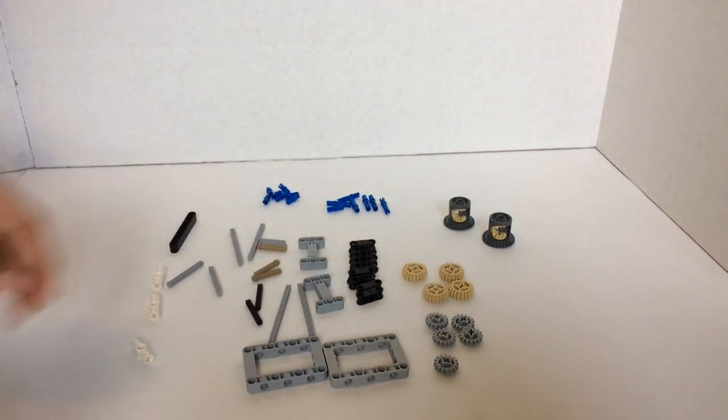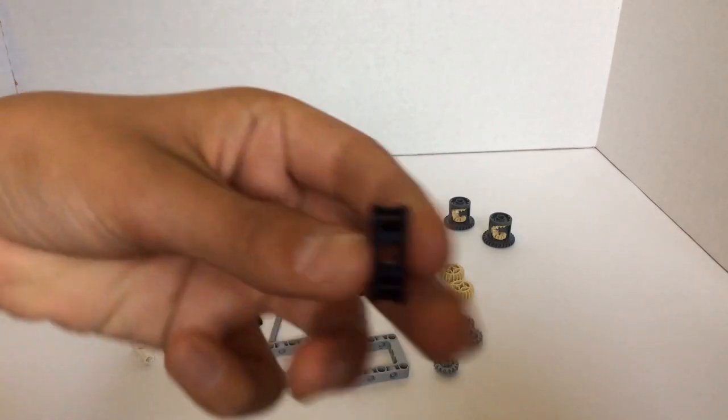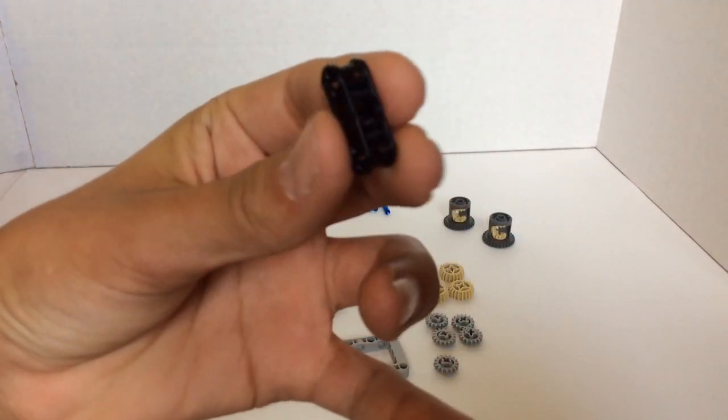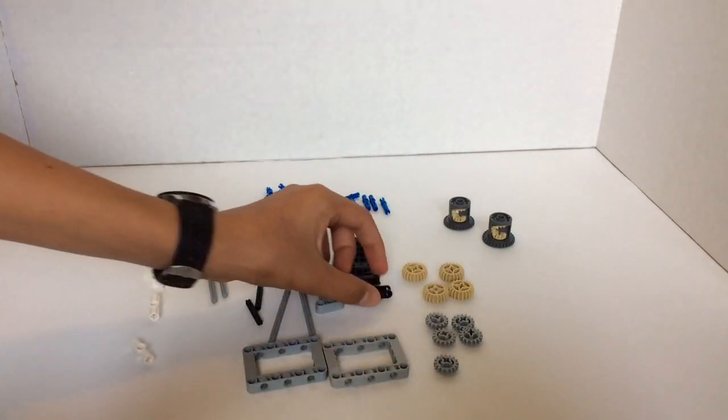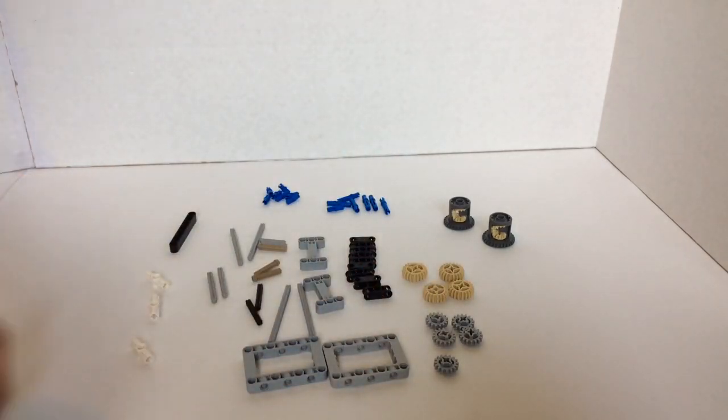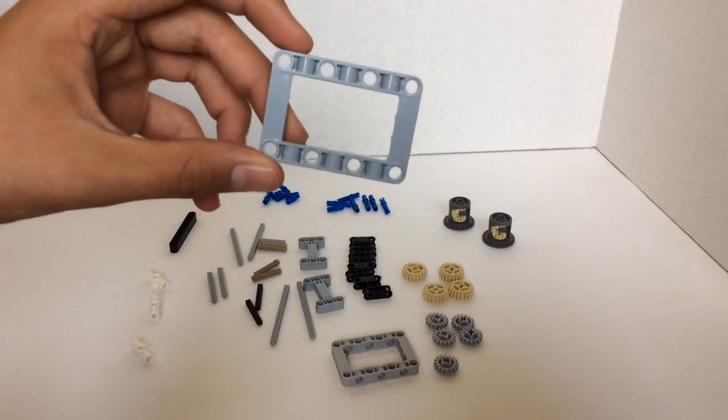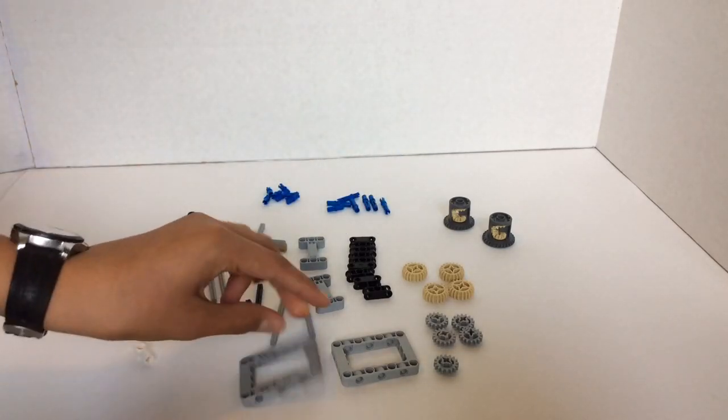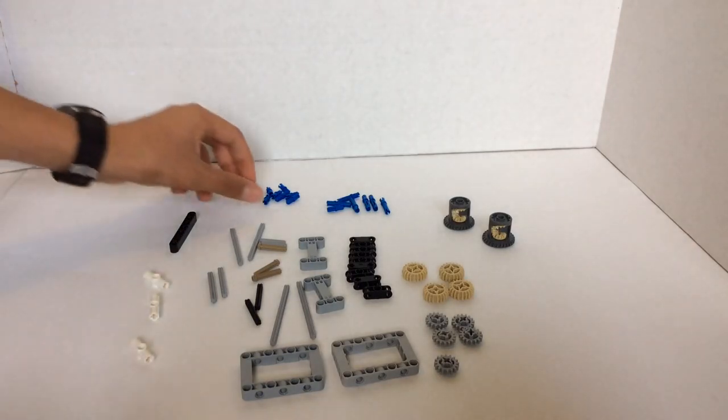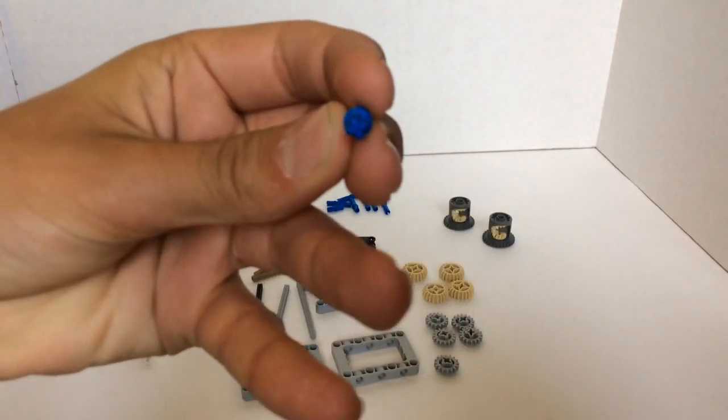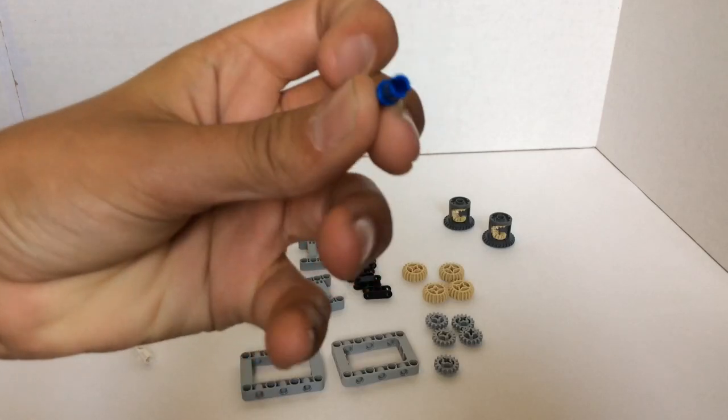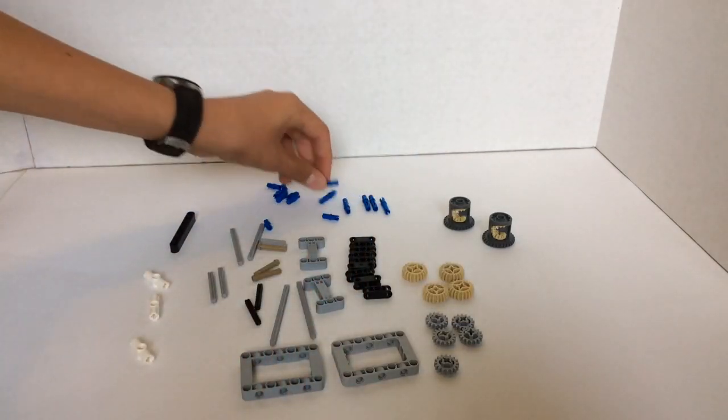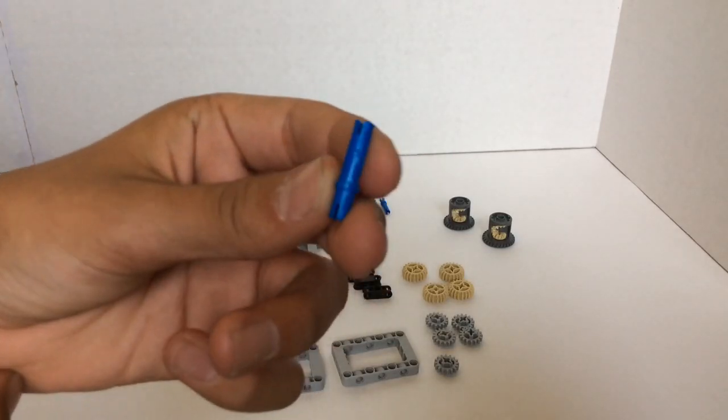You'll need nine 3-stud beams that have the X and then the circle. You'll need two 5x7 frames, big rectangles. You'll need eight of these 2L pins with the X on one side and the circle on the other, and you'll need six 3-stud pins.